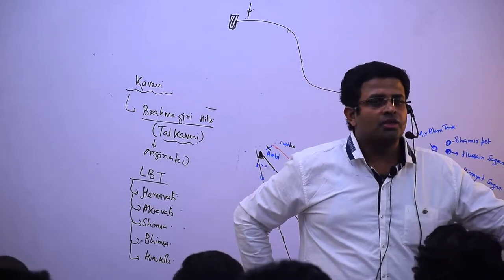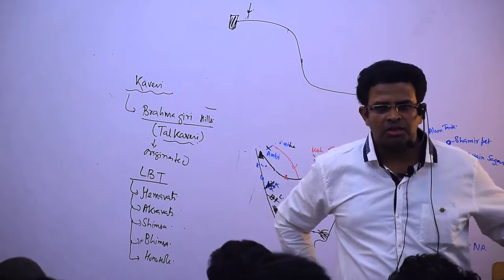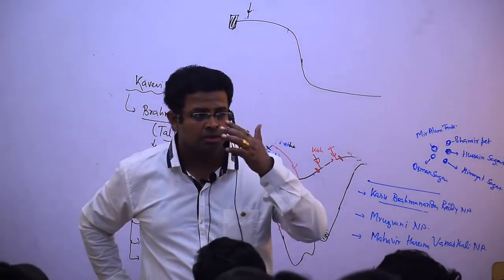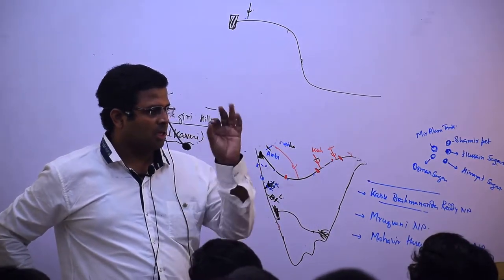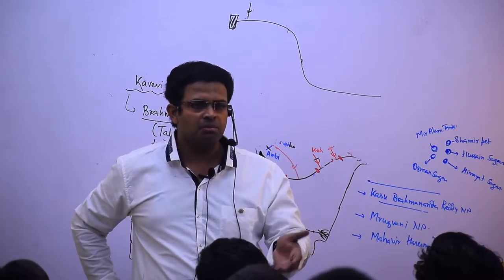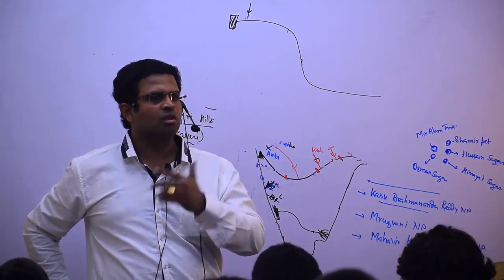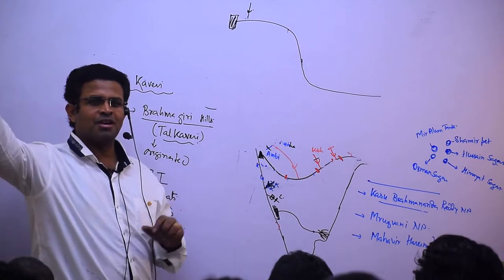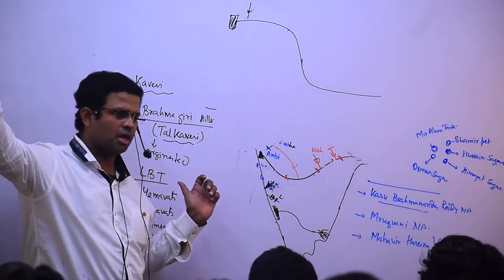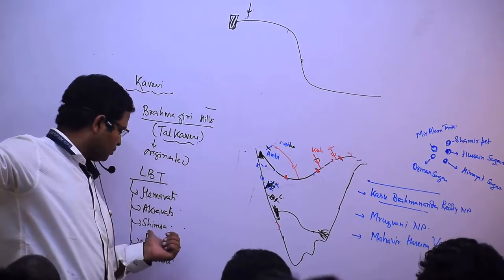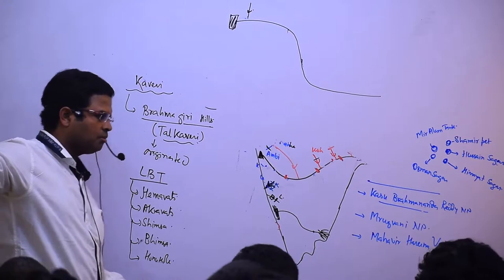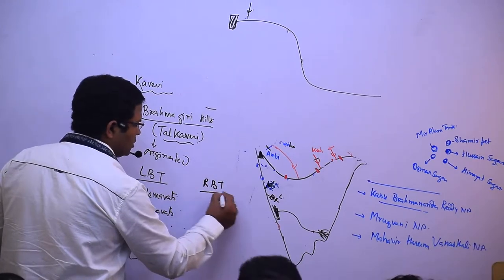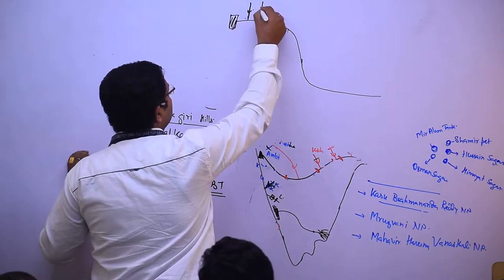Left bank tributaries: Hemavati, Akravati, Simsa, Bhimsa, Honu Hol. Tell me fast - Hemavati, Akravati, Simsa, Bhimsa, Honu Hol. Some students just listen to others speak. Hemavati ka akad gaya seam, and it's bheem-like, with honu hol.